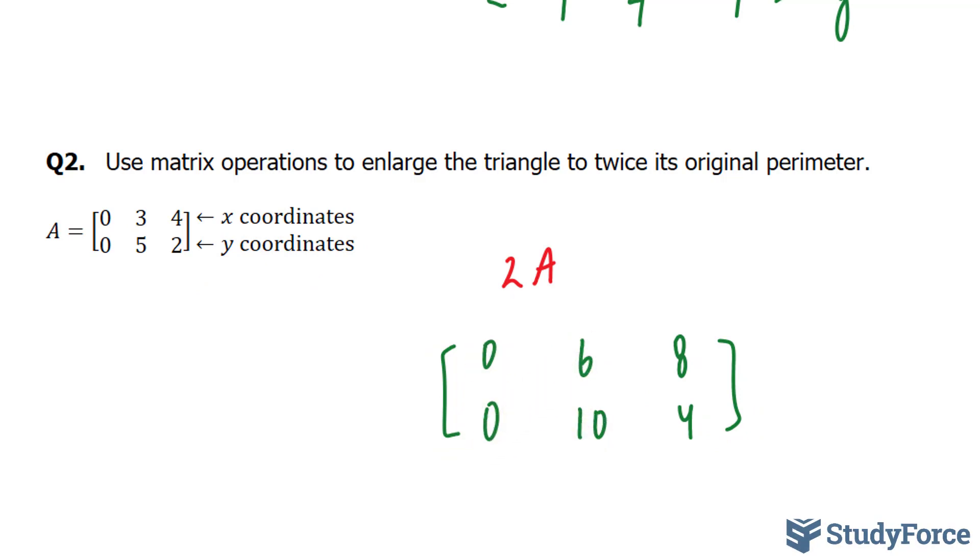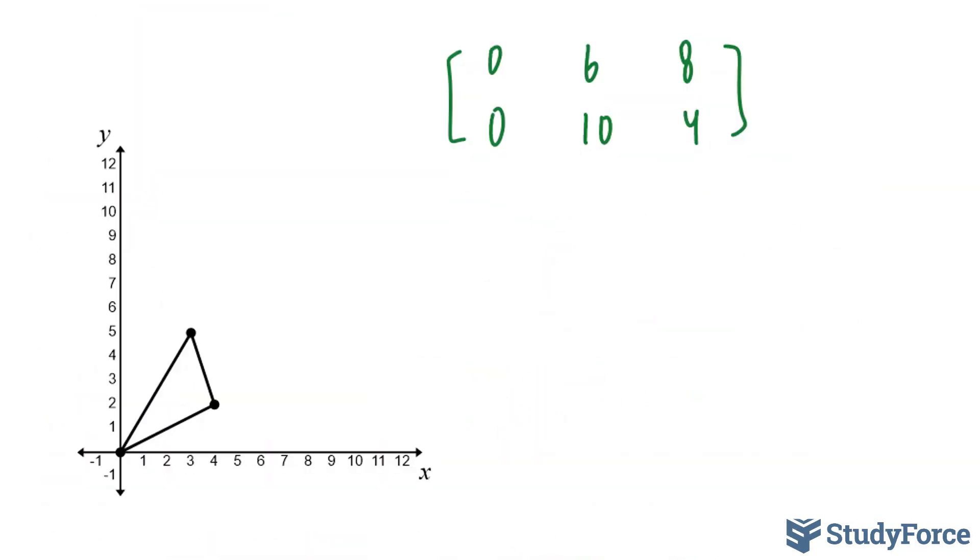We have 0 and 0, 6 and 10, and 8 and 4. Now what you see on your screen is the original triangle. Our new point will be 0 and 0. That overlaps the original. 6 and 10 is up here. And 8 and 4 is over here. Connecting these points, you should have a triangle that looks like this. As you can see, it's twice the original size.